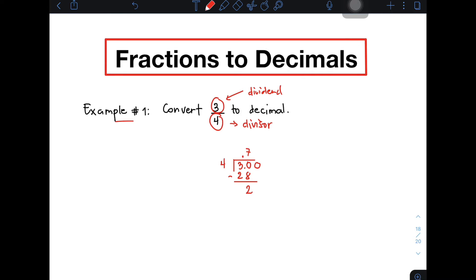Add a 0 here, bring it down, that will give you 20. And 20 divided by 4, that will give you 5. And then 5 times 4, that is 20. Subtract, that will give you 0. Therefore, the equivalent decimal of 3 over 4 is equal to 0.75.